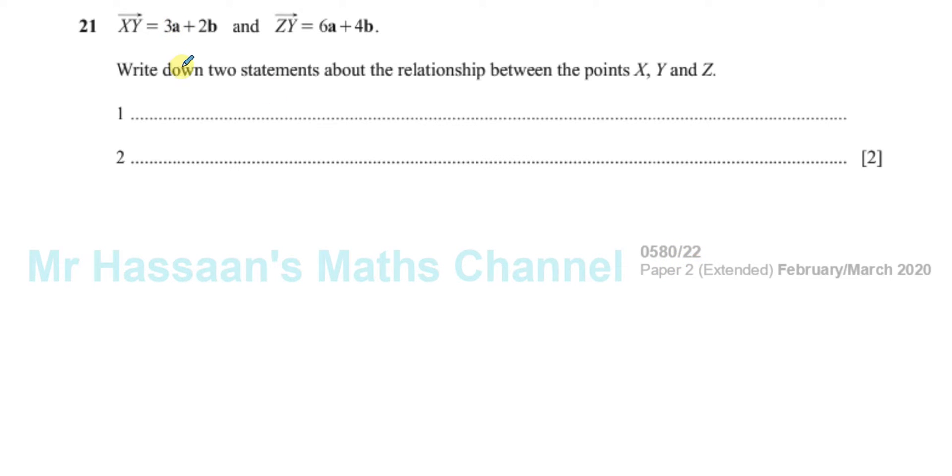This question here is about vectors and it tells us that the vector from X to Y is equal to 3a plus 2b and the vector from Z to Y is equal to 6a plus 4b, and we have to write down two statements about the relationship between the points X, Y, and Z.